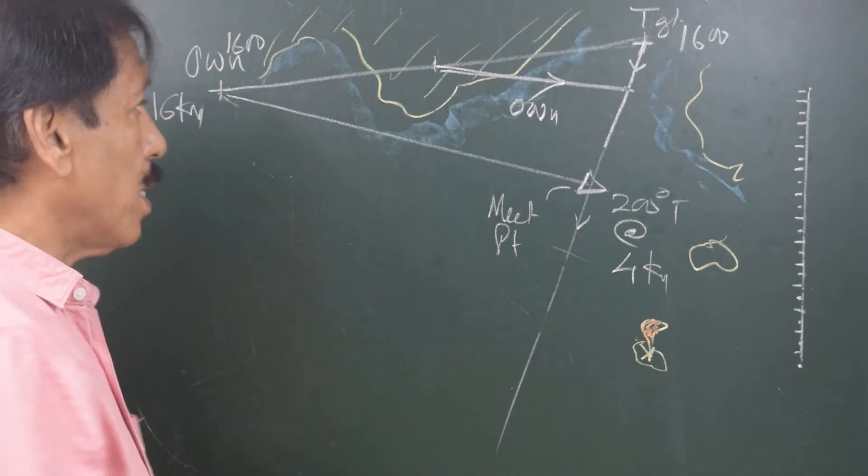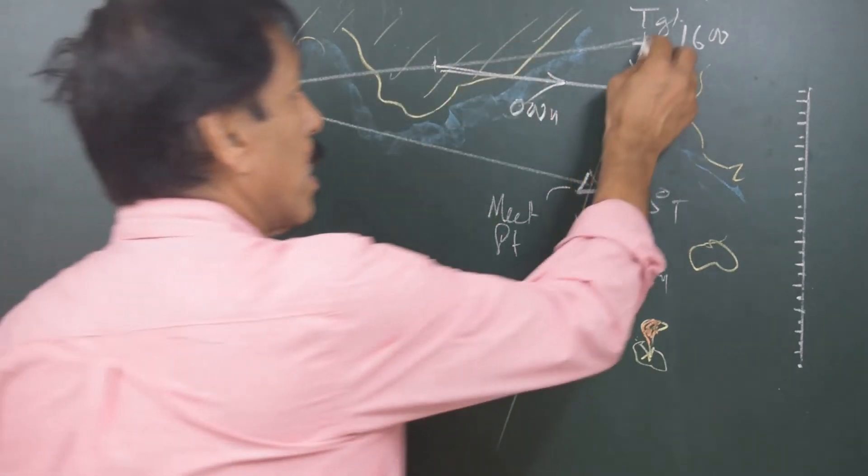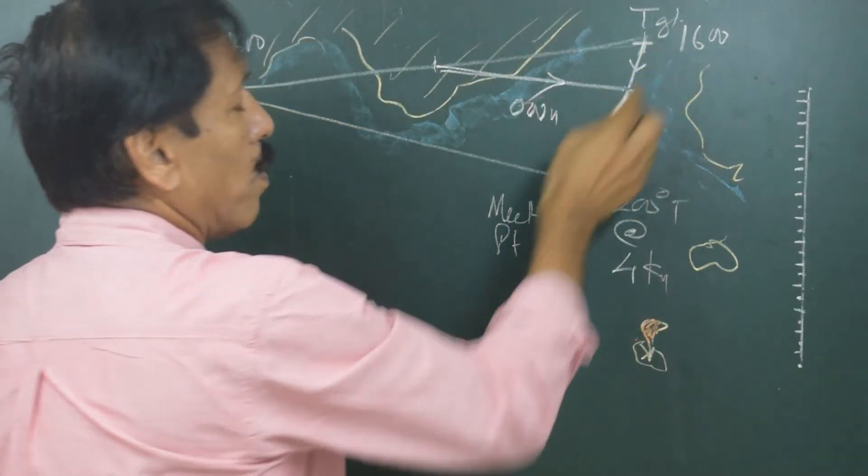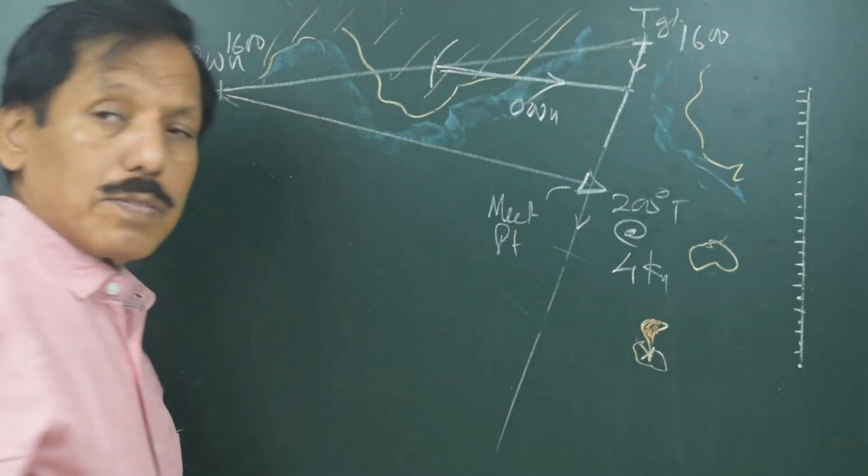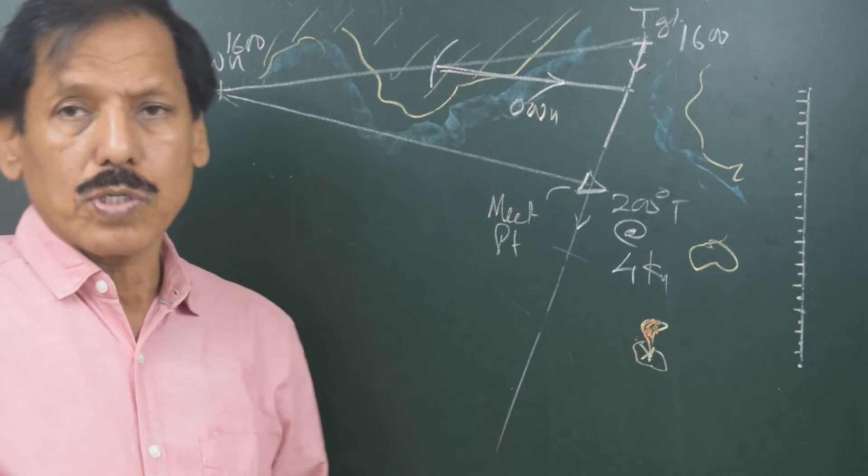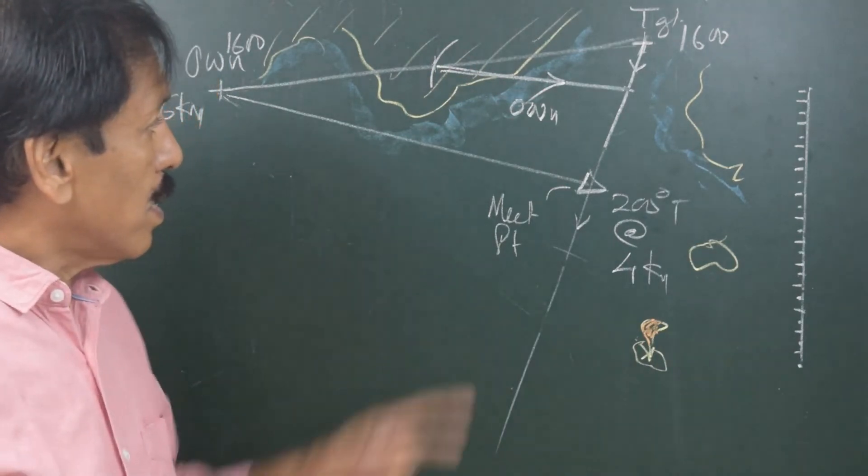So once again, quickly, we join the position, cut a distance of 4 miles—that is the speed of the target—and from here I cut an arc of 16 miles, which is my speed. This is the course to steer and this is the distance traveled in 1 hour by own ship.